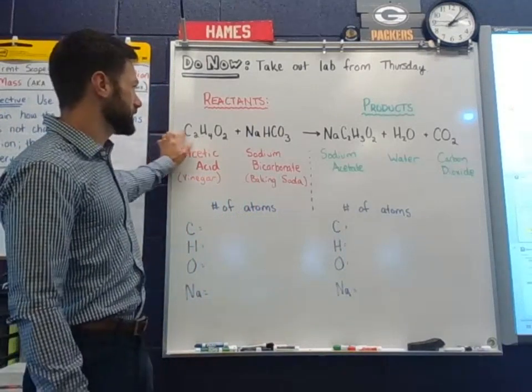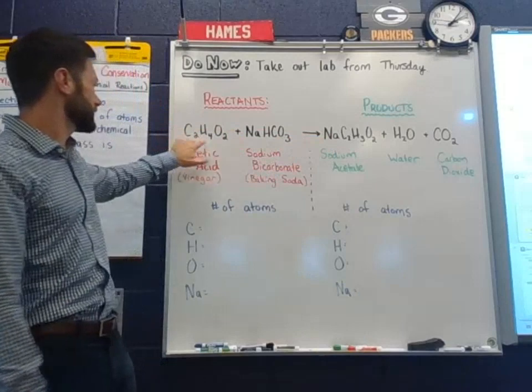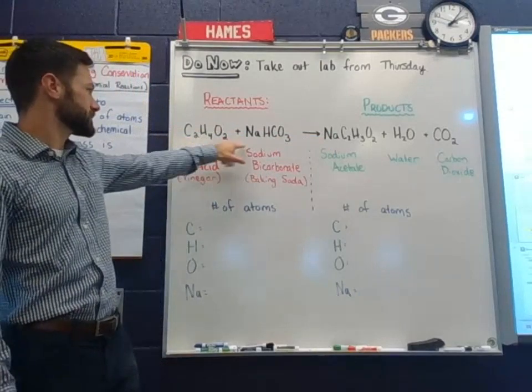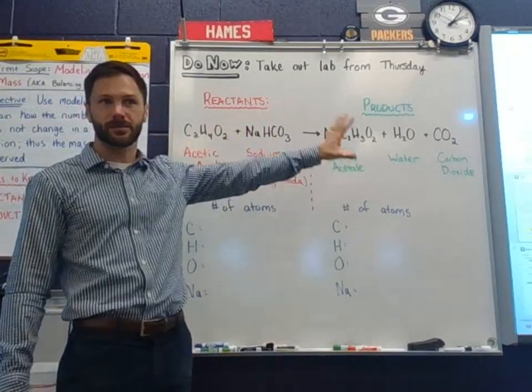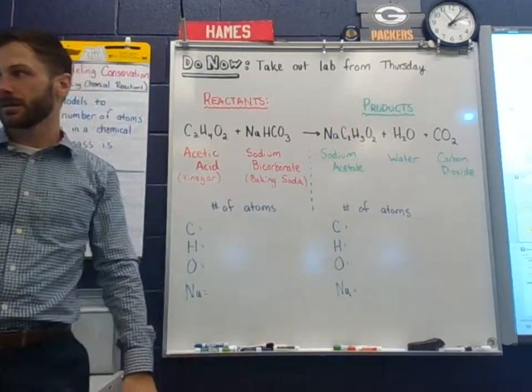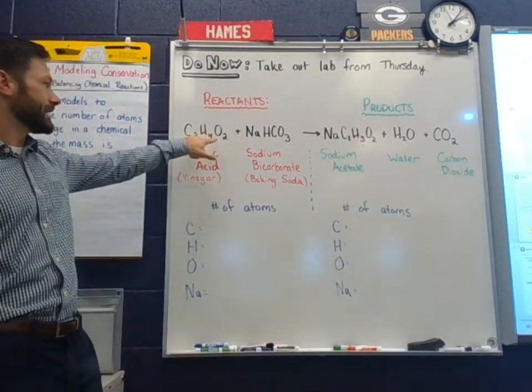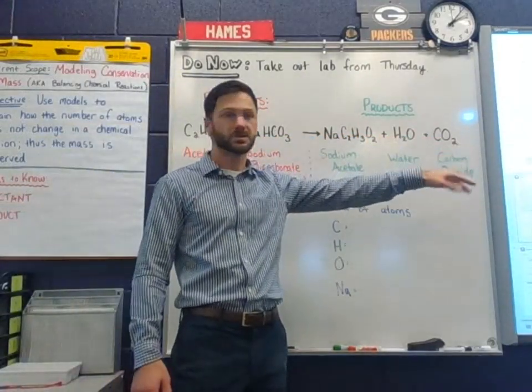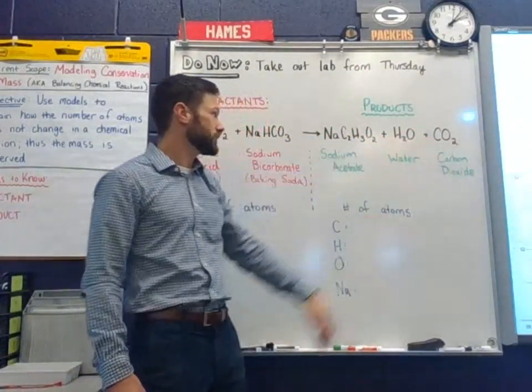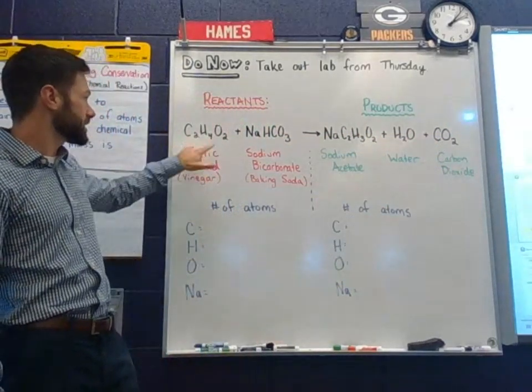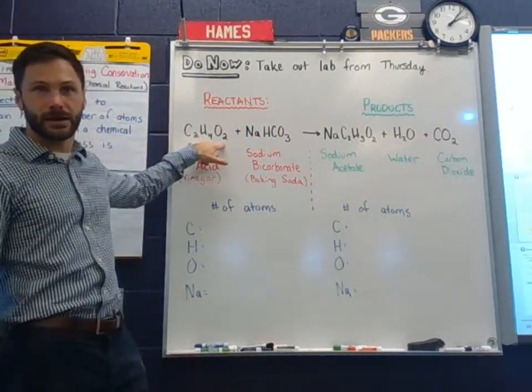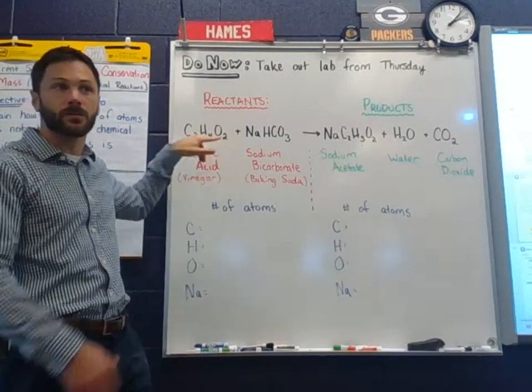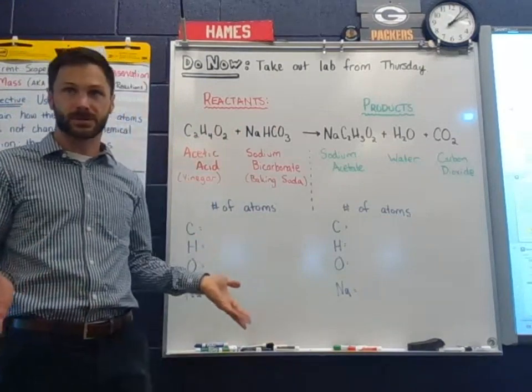Now, does anybody know what this is called, this long kind of random letters and subscripts and everything like this, this combination of molecules? What's this whole thing called, Ryan? A chemical equation. And each one of these is the chemical formula for a molecule, right? Some of these we've seen before, like CO2 and H2O. We got a couple new ones here, but a molecule is just a unique combination of atoms, and how those atoms are arranged tells us what the substance is.